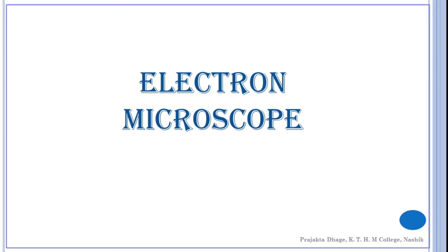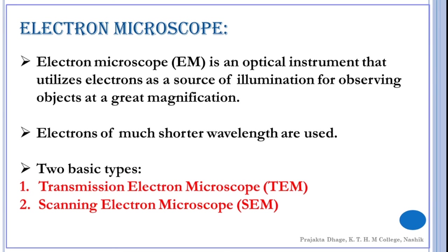Today we will be studying about the electron microscopes. Electron microscope is an optical instrument which utilizes electrons as a source of illumination for observing objects at a greater magnification. It can achieve a very high power of resolution because it uses electrons of much shorter wavelengths.